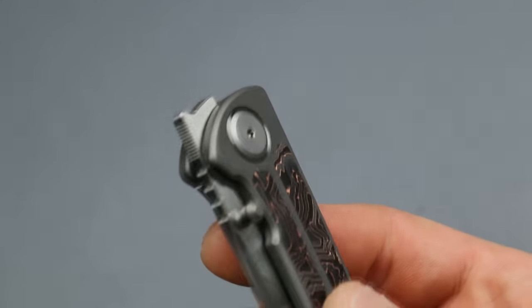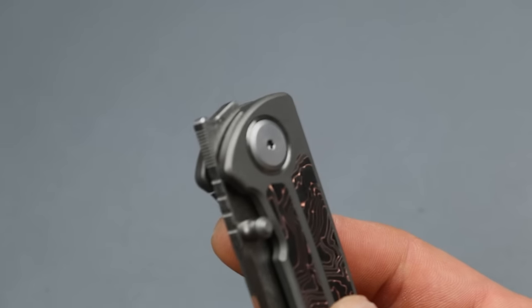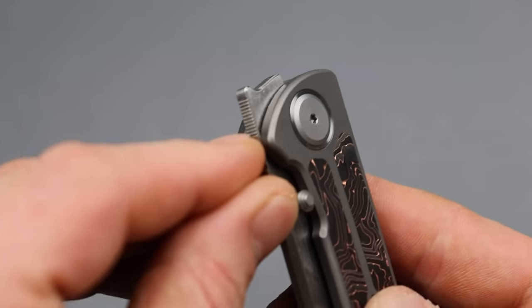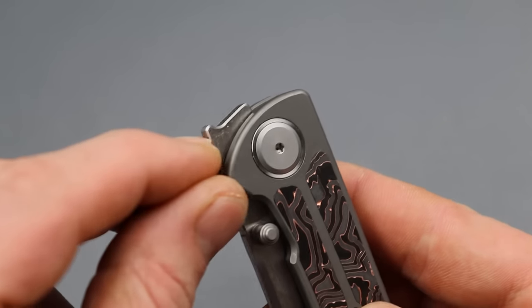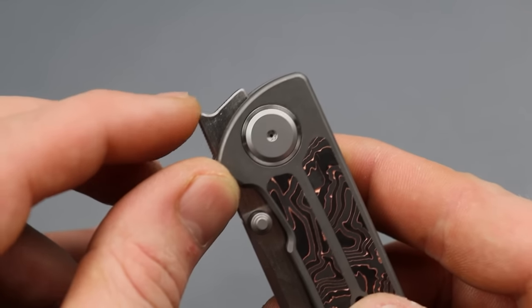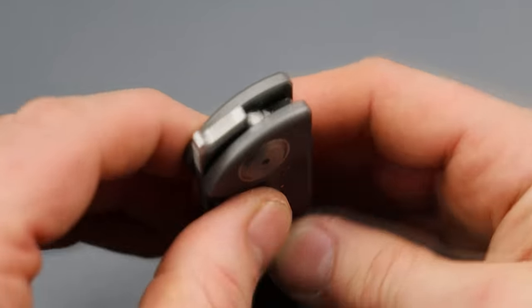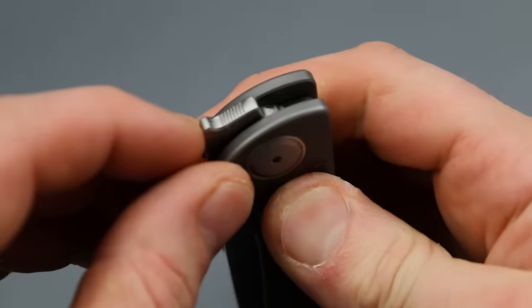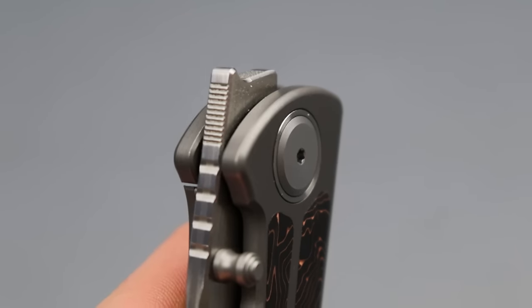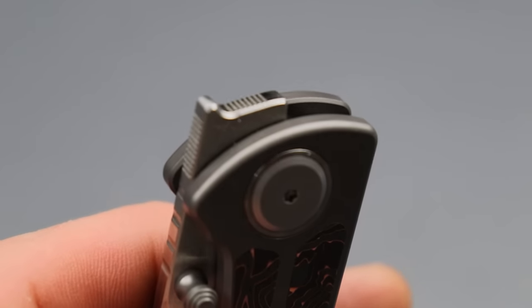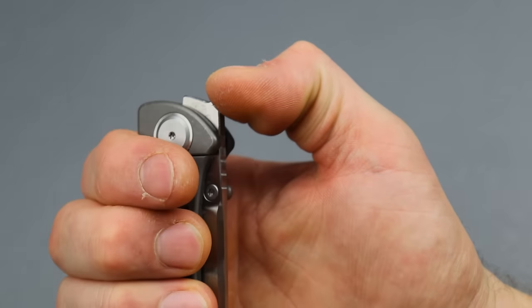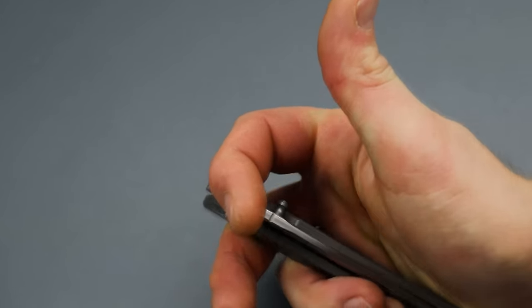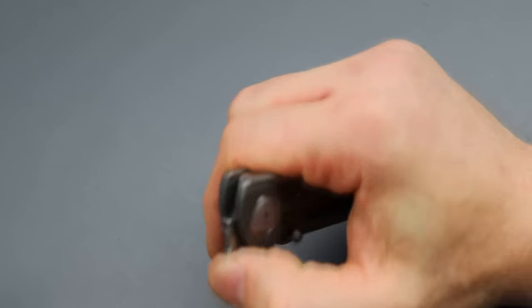Now something I don't understand is why they stopped the jimping. This could possibly make this thing way better. They stopped the jimping before the top. They put jimping over here which I don't know why, you can't do anything right there, that doesn't make sense, but they stopped it over here. Why not bring it up and all the way around so that when your finger's up here at the top you don't slip off. It would have made it a lot better to do that.